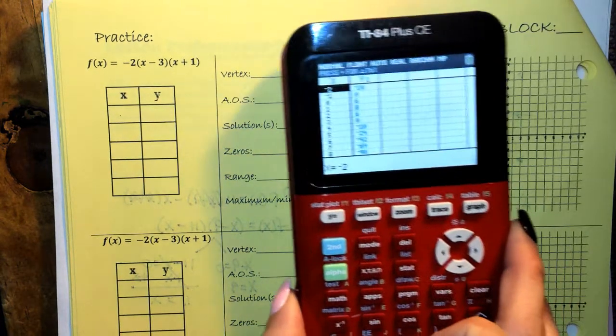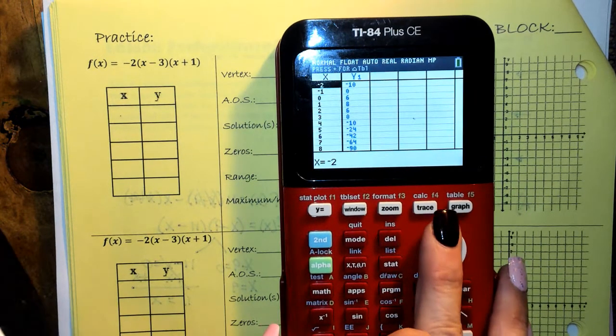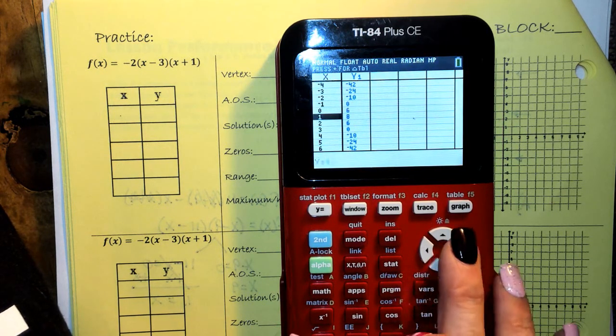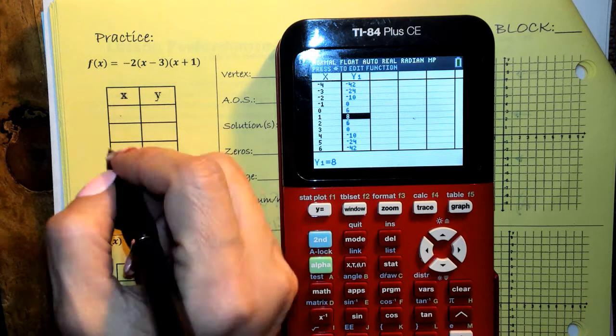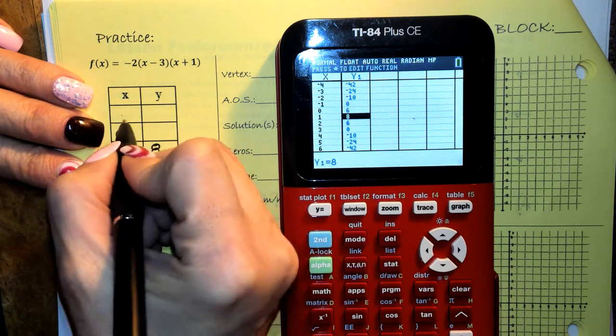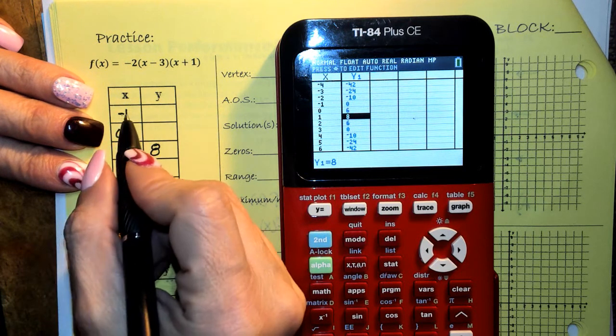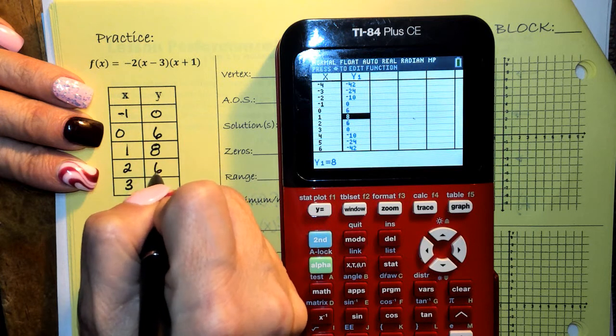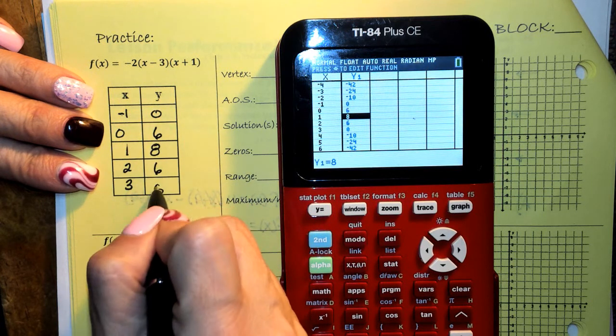Let's do second table, and let's see if we can find that vertex. Look for those doubles, and right here at 1, 8, that is my middle point, so that's going to be my vertex. So I'm going to do 0, negative 1, 2, and 3, then 0, 6, 6, 0.